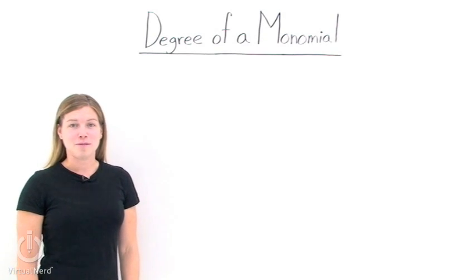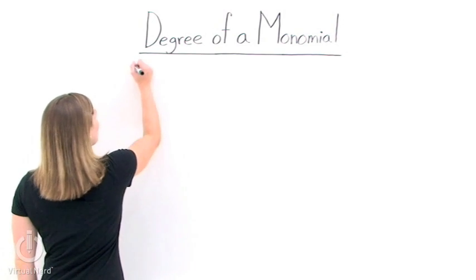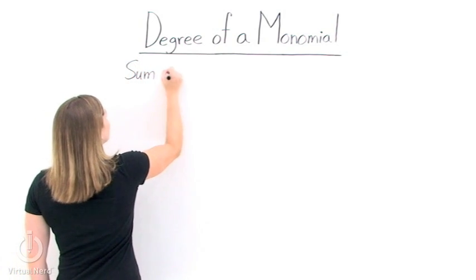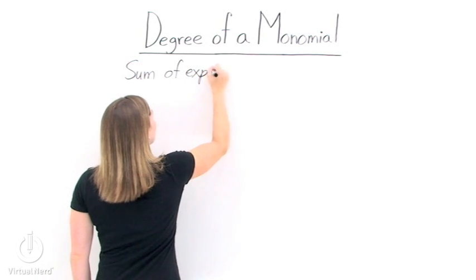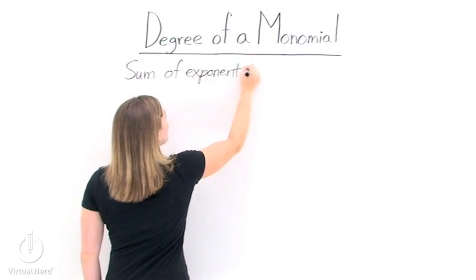How do we find the degree of a monomial? To find the degree of a monomial, we need to take the sum of the exponents of all of the variables in our monomial.